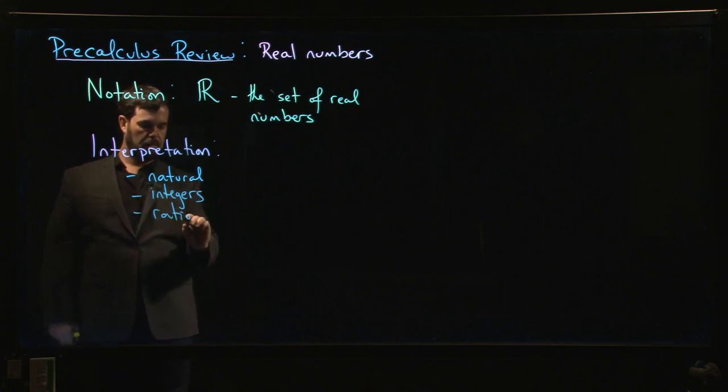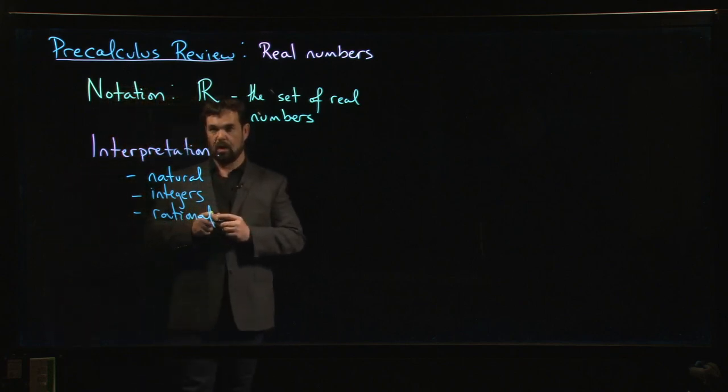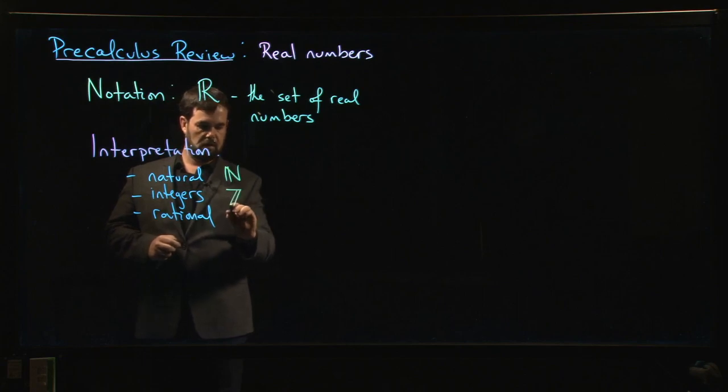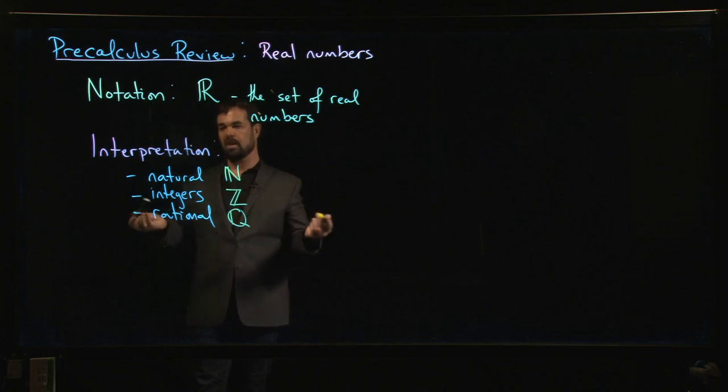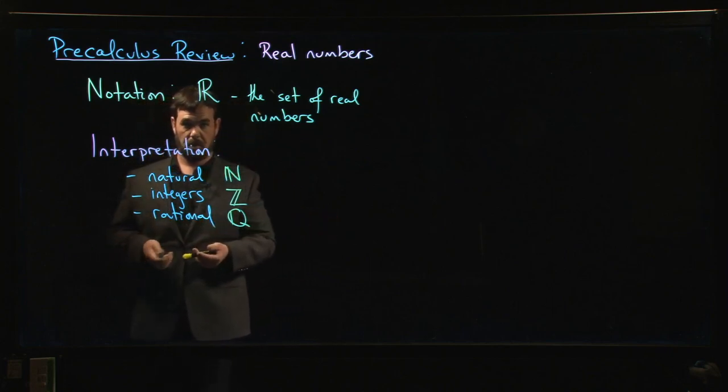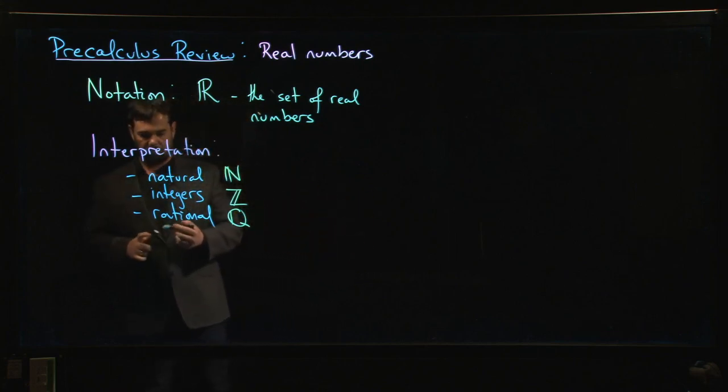Your rational numbers, those are in there. And by the way, these sets also have symbols just like R. The natural numbers, the integers are typically denoted with a Z, rational numbers – R is already taken, so we use Q for quotient. So we have all of these, but that's not everything. We know that there are irrational numbers like pi and E and the square root of 2. So you throw in all the irrational numbers as well.